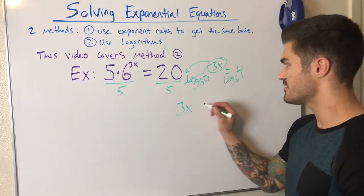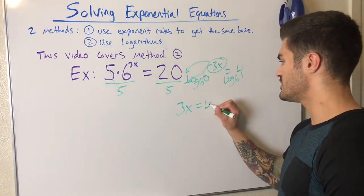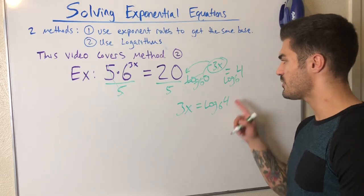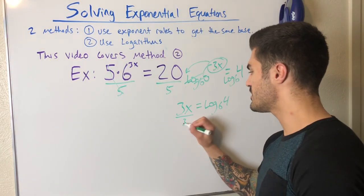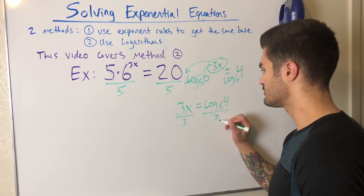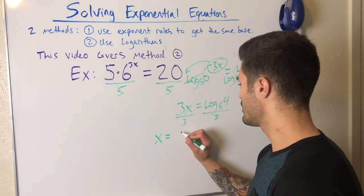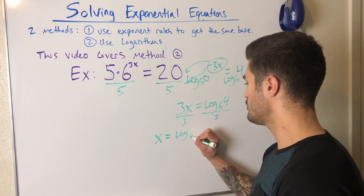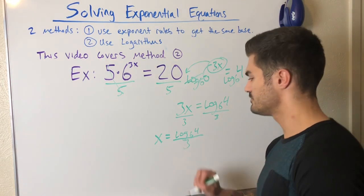Using the trick: log base 6 of 6 cancels out, leaving 3X equals log base 6 of 84 on the right-hand side. Now I divide both sides by 3, giving the final solution: X equals log base 6 of 84 over 3.